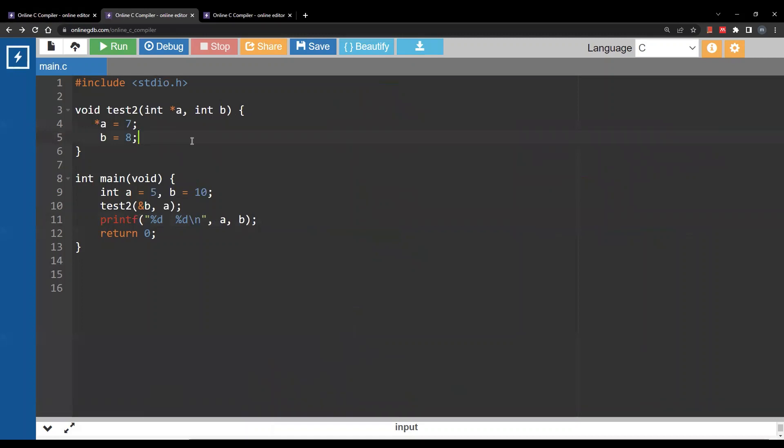Okay let's see the next exercise. You have a main function and test2. You start from the main function. I have a equals 5, b equals 10, and I am calling test2. I am passing the address of b to the variable a and the value of a to the variable b. Now I am inside test2. Variable a has the value of the address of b. Now assume this is 100, this is 200. These are the addresses again.